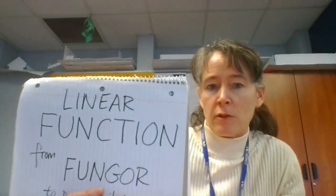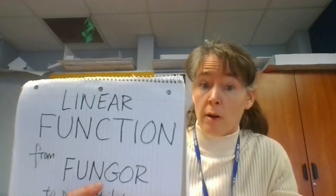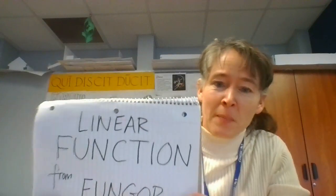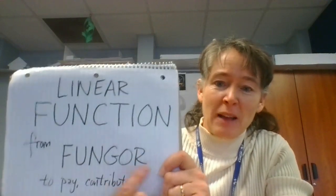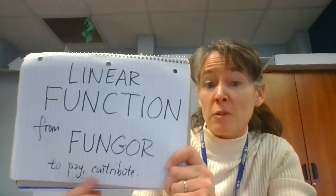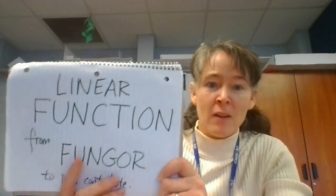That'll eventually help us understand slope-intercept form, a kind of equation. The word function in English comes from the Latin word 'fungor,' which can mean among other things to pay or contribute. The idea is that if you pay money into something, you're going to get something out. So a function is where you input a value — the x value — and you get something out, that's the y value, and you can graph those on an x and y axis.